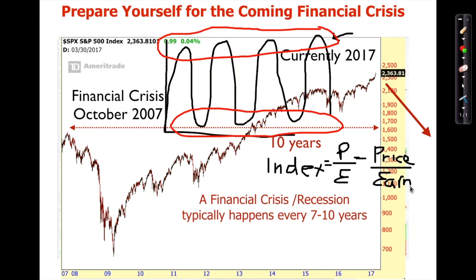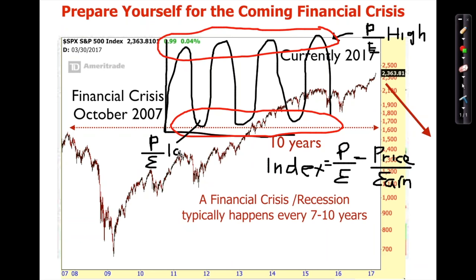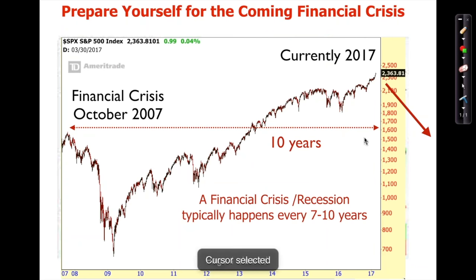When the market is at the top of the cycle — at a bubble — prices are very high relative to company earnings, so the PE ratio is very high. When the market is near the bottom after a crash, prices are very low because no one dares to buy, so PE is very low. What is considered high and what is considered low? To answer that, let's take a look at history.